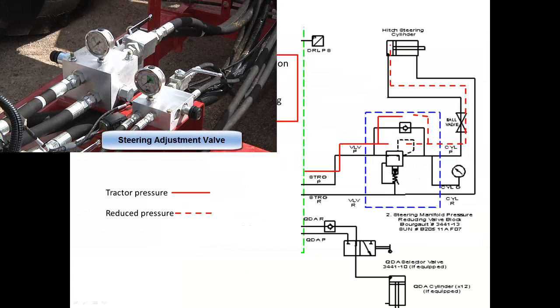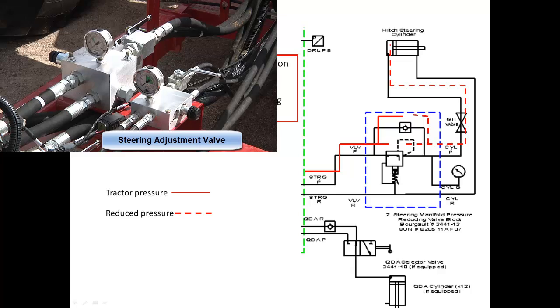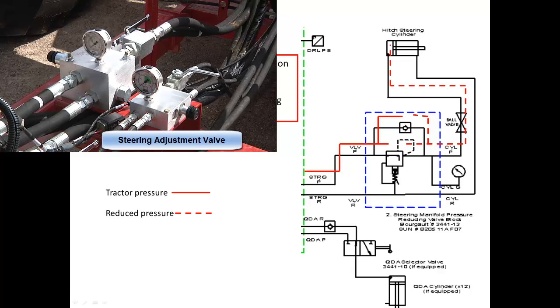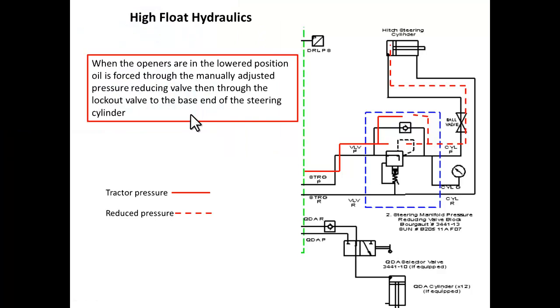When the openers are in the lowered position, oil is forced through the manually adjusted pressure reducing valve, then through the lockout valve to the base end of the steering cylinders. So oil after the directional control goes to its pressure adjusted and to the base end of the steering cylinders. So when the openers are down, the steering cylinders are extended to the adjusted relief pressure. Some manual adjustment.